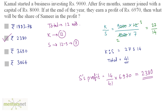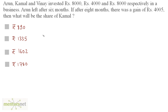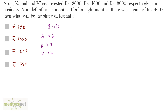So the correct answer is option B. Next question: Arun, Kamal and Vinay invested 8,000, 4,000 and 8,000 rupees respectively in a business. Arun left after six months. After eight months there was a gain of 4,005. The total time period is eight months. Arun did business for six months whereas Kamal and Vinay were there for all eight months.